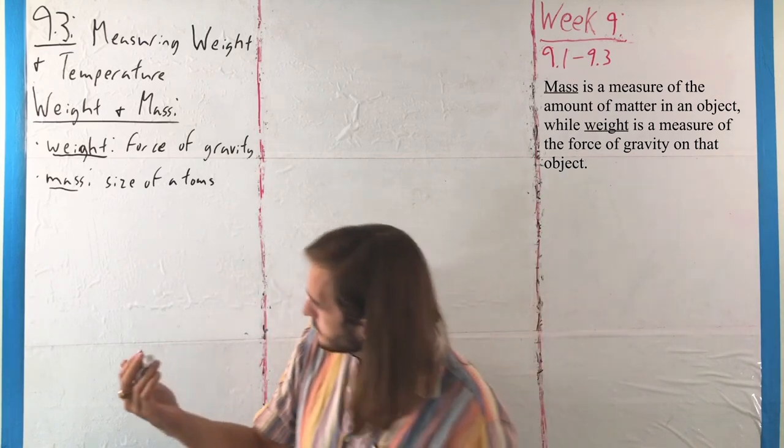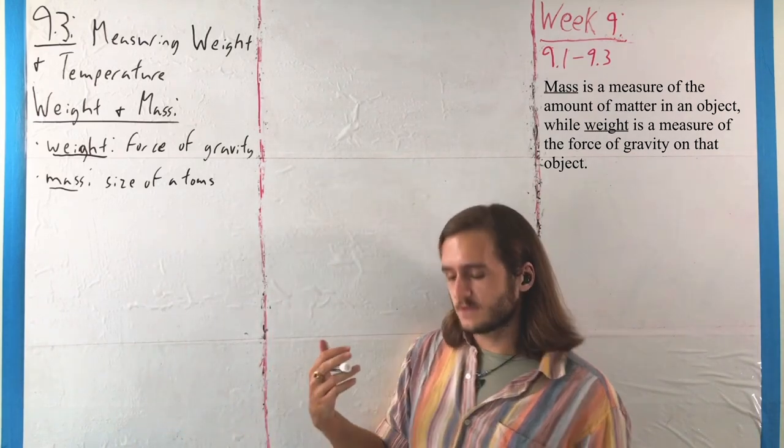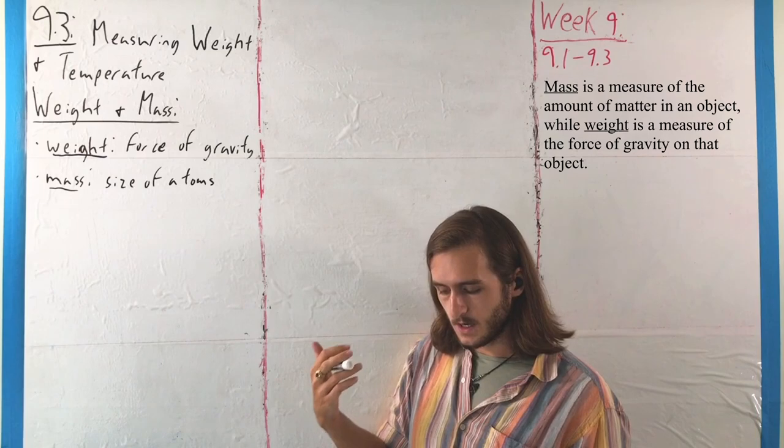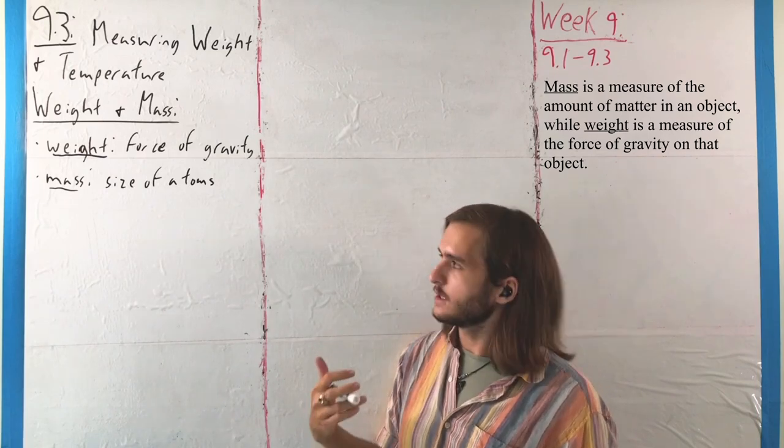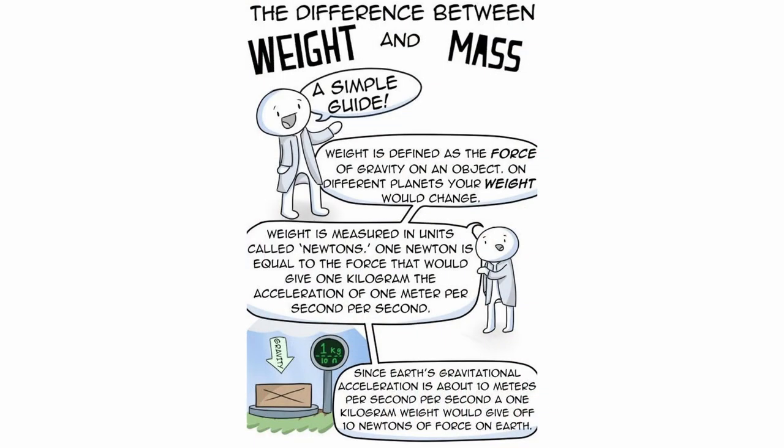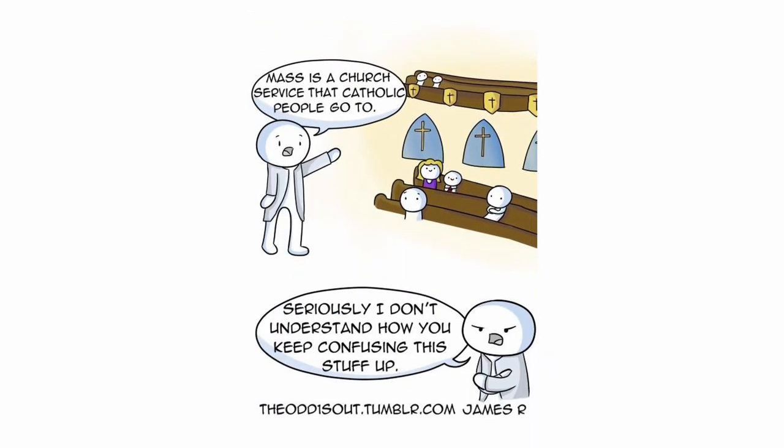On the other hand, mass refers specifically to the size of something in terms of its atoms, in terms of its molecular structure, where in a class like physics or chemistry, these would be really important distinctions. But for us, we're focused more on everyday uses of these things.